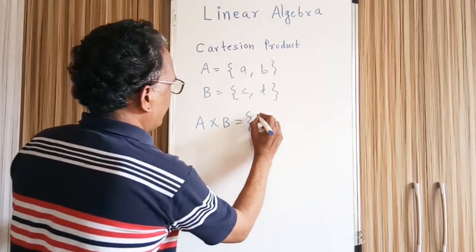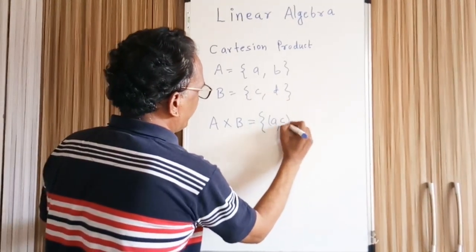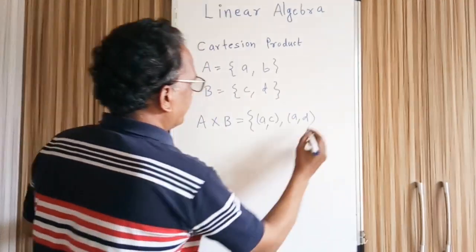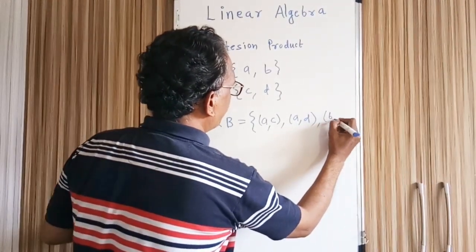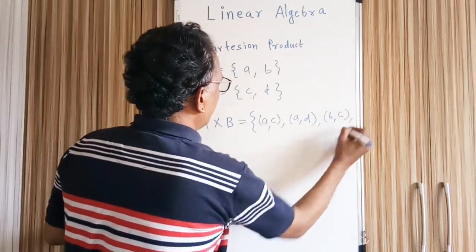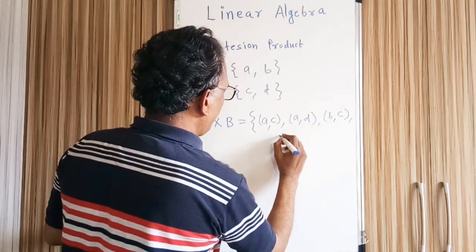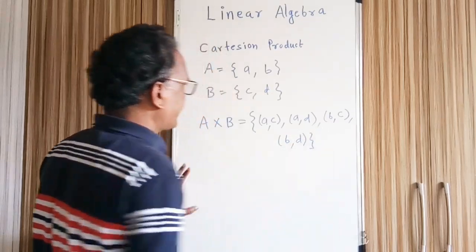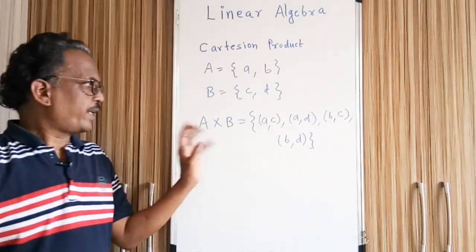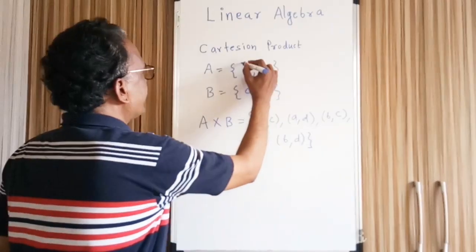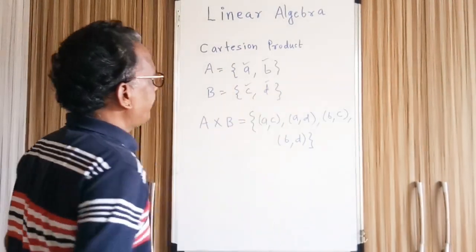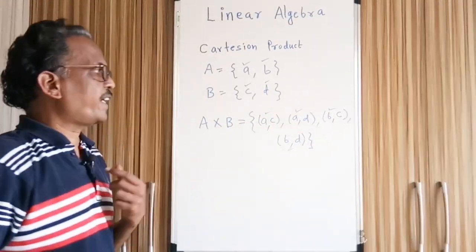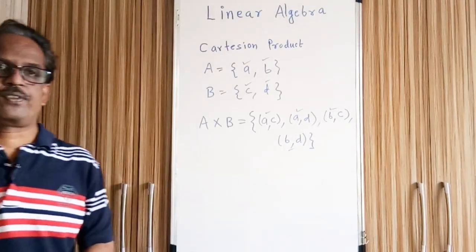So the first element is the first element of set A and first element of set B. Then first element of set A and second element of set B. Then second element of set A and first element of set B. And then last element of set A and last element of set B. So this is the Cartesian product of two sets A and B. Here A and B were having scalar elements, but in A cross B each element is a pair — a pair of two scalars.